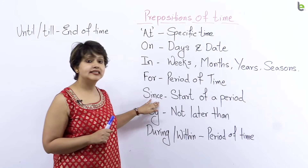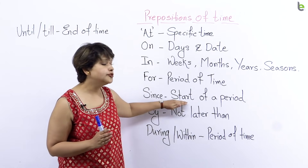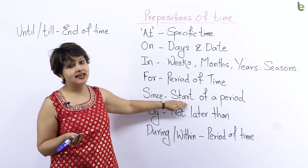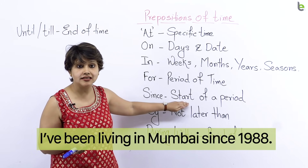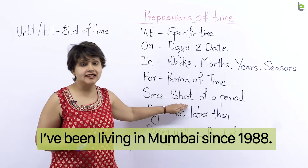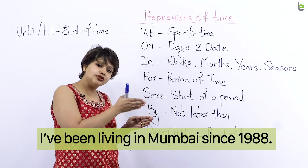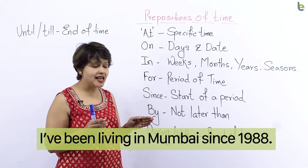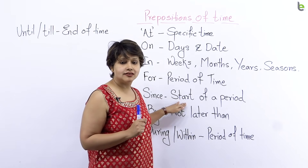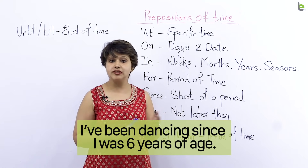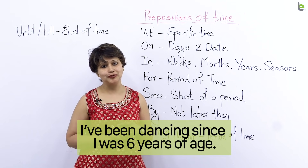Next one is SINCE. Since ko aap tab use karayin jab aap kisi cheez ko jab aapne shuru ki — aap wo batana chahte hain. For example: 'I have been living in Mumbai since 1988.' Main Mumbai mein 1988 se reh rahi hun. Aapne yeh bataya ki wo shuruwaat — jab yeh ghatna shuru hui — aapne wo darshaya with the help of the word since. Another sentence: 'I've been dancing since I was six years of age.' Jab mein chhe saal ki thi, tab se mein dance karti aa rahi hun.